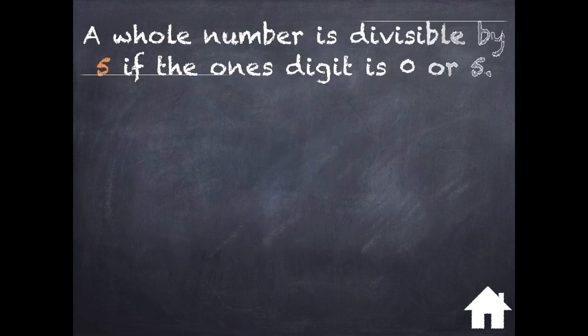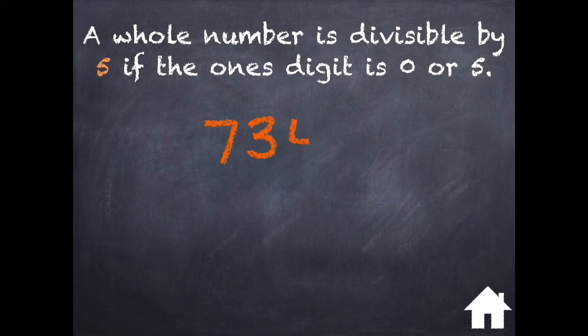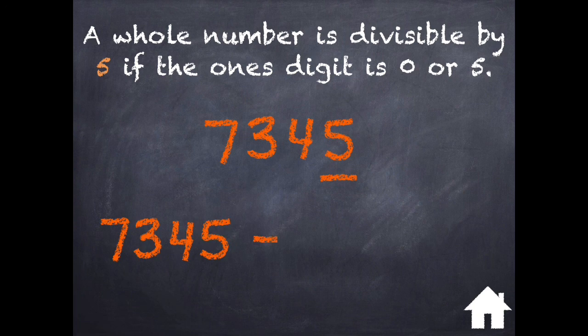A whole number is divisible by 5 if the 1's digit is 0 or 5. Let's take a look at the number 7345. Looking at the number in the 1's place value, there is a 5, so I know this number is divisible by 5. 7345 divided by 5 is 1469.